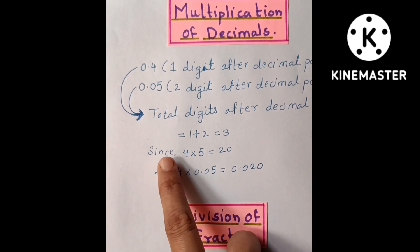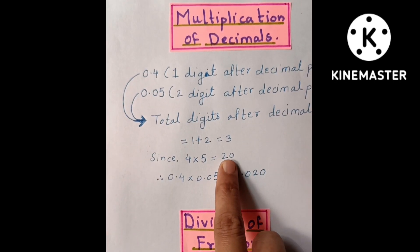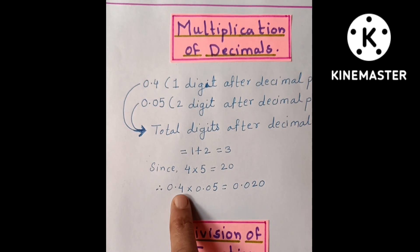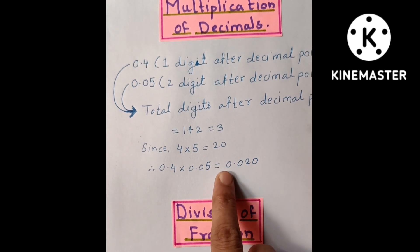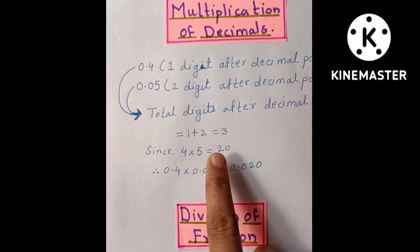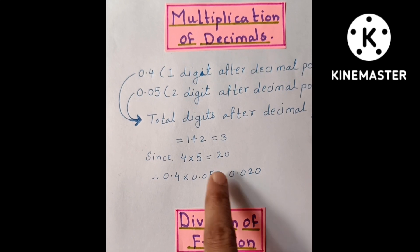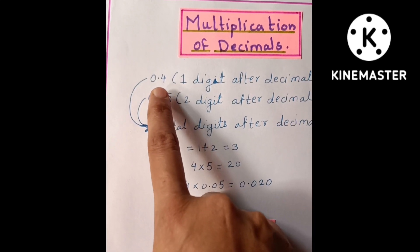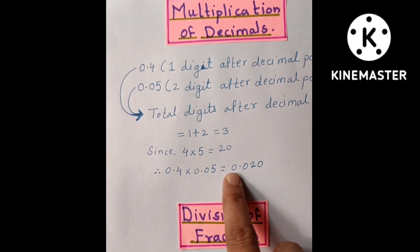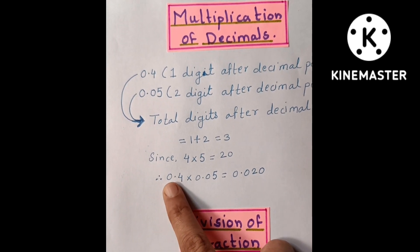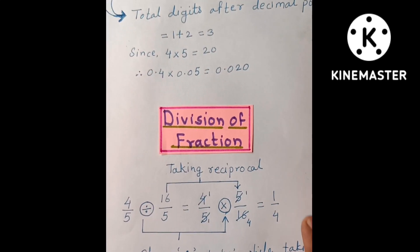Four multiplied by five is equal to twenty. Then 0.4 multiplied by 0.05 is equal to 0.020. We place three digits after the decimal because the total digits after the decimal are three — one plus two equals three. So here is the product: 0.4 multiplied by 0.05 equals 0.020.